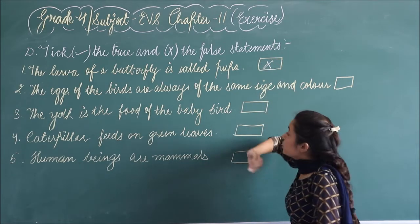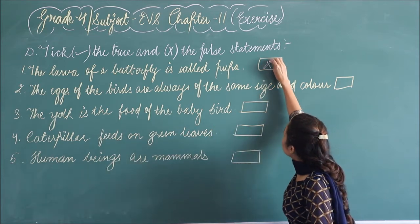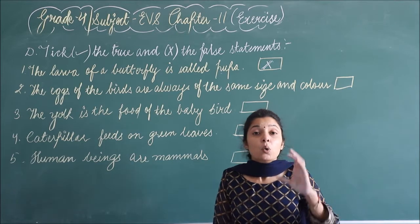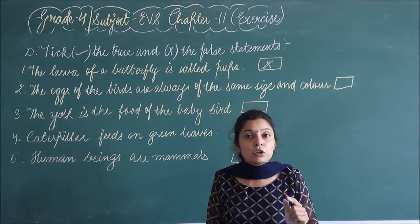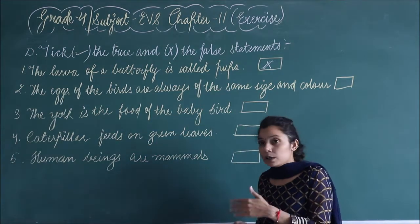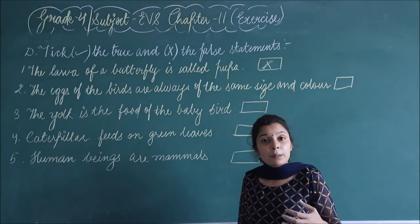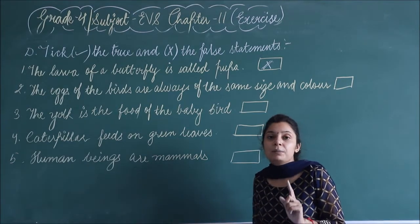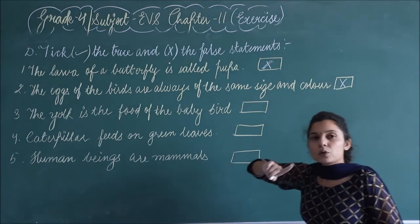Second: the eggs of the birds are always of the same size and color. This is a wrong statement — alag-alag birds hain, alag-alag birds ki jo eggs hain, unki shape aur size different hoti hai. Same kabhi bhi nahi hota. So this statement is also wrong — cross.